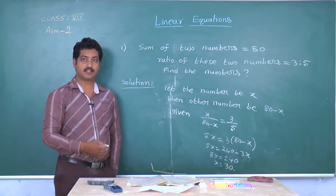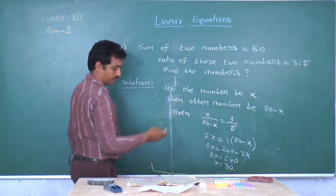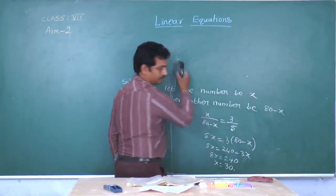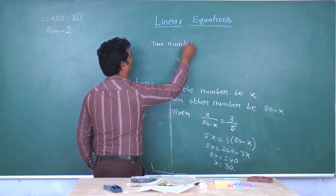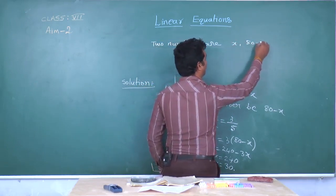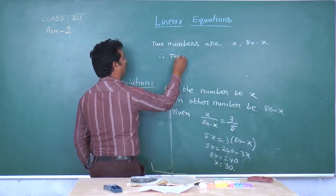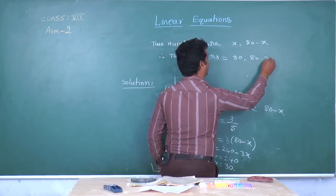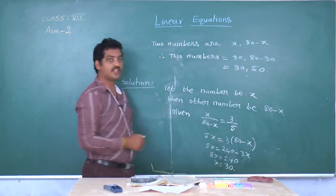Therefore, the two numbers are: x equals 30, and 80 minus x equals 80 minus 30, which equals 50. So the two numbers are 30 and 50.